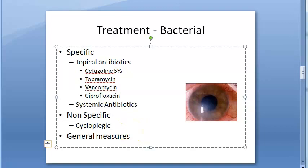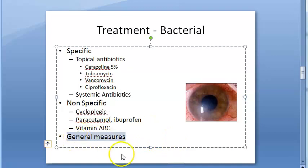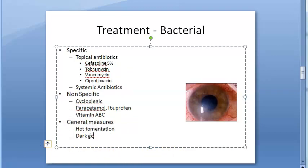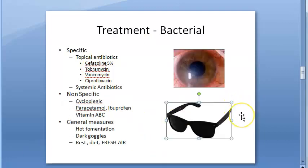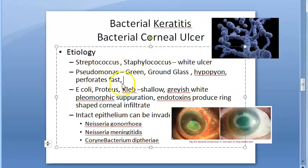For non-specific treatment: cycloplegics like atropine or homatropine to control spasm and pain, and to increase blood supply to aid healing. Systemic analgesics and anti-inflammatories such as paracetamol and ibuprofen can be given. Vitamins A, B, and C help healing. General measures include hot fomentation, dark goggles for photophobia, rest, and a fresh-air diet.